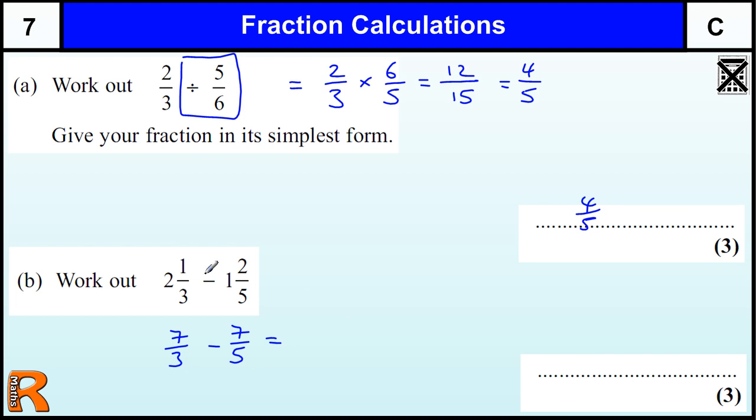And then when we're adding and subtracting, we try to make them out of a common denominator. Usually, quite often, that's just these two multiplied by each other, which it is in this case. So 3 times 5 is 15. So they both go into 15. And then how many times does 3 go into 15? Well, it goes in 5 times. So I'm actually timesing the 5 by the 7 to get 35. How many times does 5 go into 15? Well, that's 3. So we've got 3 times 7, which is 21.